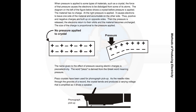Then the pressure is released, the electrons return to their orbits, and the material becomes uncharged. The size of the charge is proportional to the pressure applied. The name given to the effect of pressure causing electric charges is piezoelectricity. The word piezo is derived from the Greek word meaning pressure. Piezo crystals have been used for phonograph pickup — as the needle rides through the grooves of the record, the crystal bends and produces a varying voltage that is amplified as it drives a speaker.